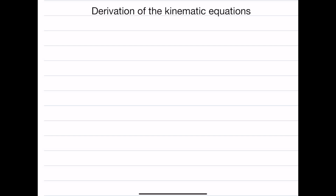A common question in physics is: where did the kinematic equations come from? We can derive the kinematic equations from the acceleration equation. The acceleration equation states that acceleration is equal to the small change in velocity divided by the small change in time — really, this is a rate. With this and our knowledge of calculus, we can take this and get the other kinematic equations.